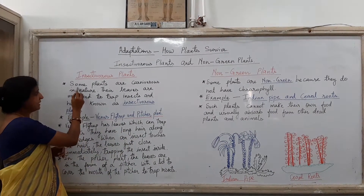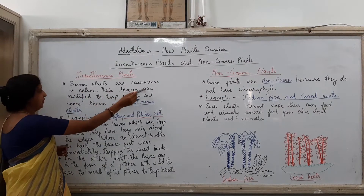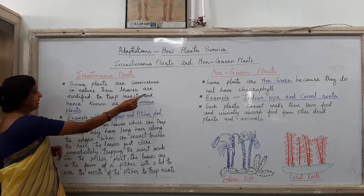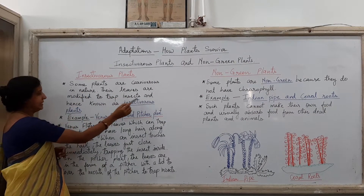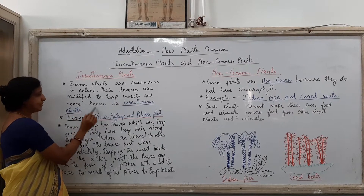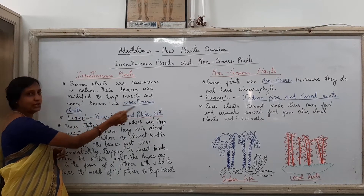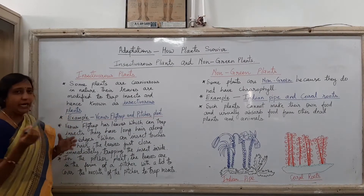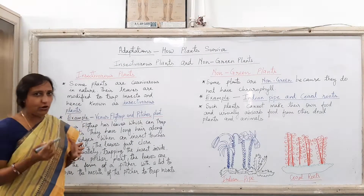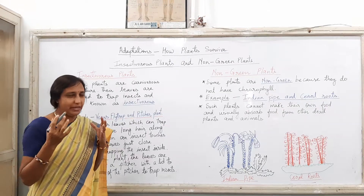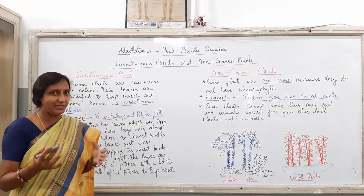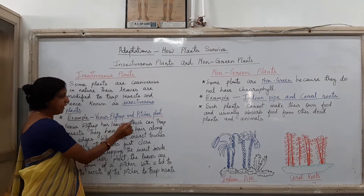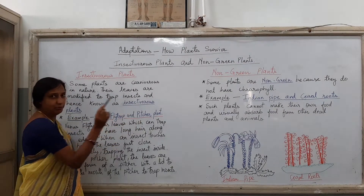So children, some plants are carnivorous in nature. Their leaves are modified to trap insects, and hence they are known as insectivorous plants. The examples of these insectivorous plants are Venus flytrap and pitcher plant.